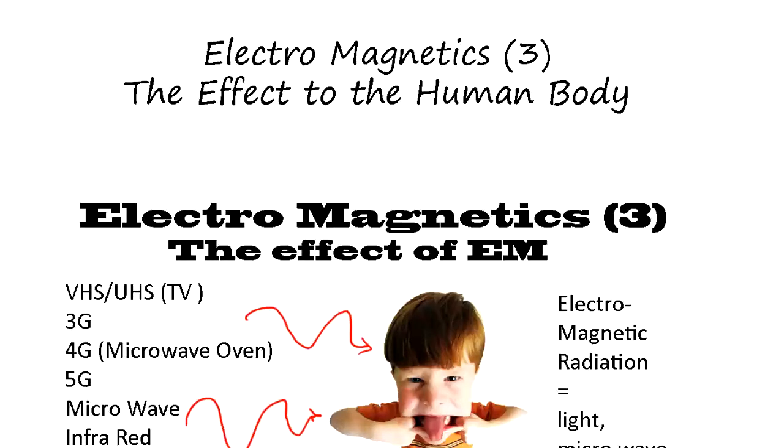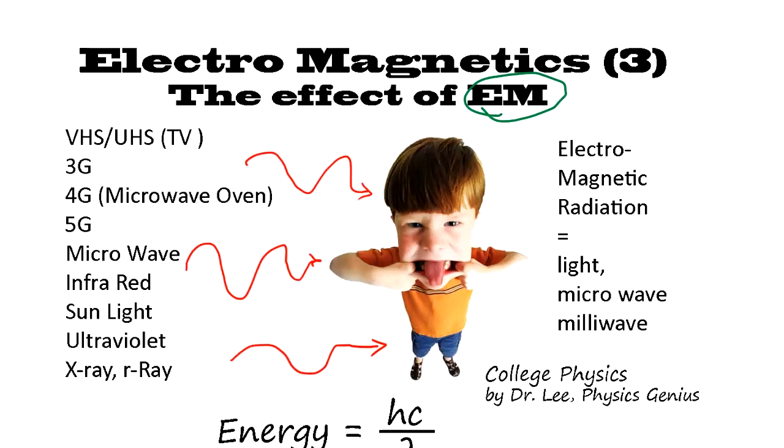Electromagnetics, the effect to the human body. It's the so-called EM wave. We've been learning electromagnetics as a college course, some basic stuff about EM wave, the radiation, electromagnetic radiation. It's light, microwave, milliwave, all of them, typically known as VHS, UHF.